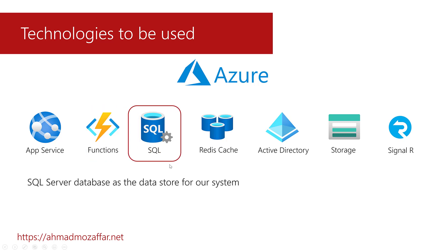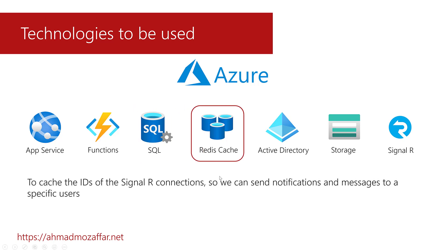The data store is going to be SQL. We will use Azure SQL databases to store the data. We will also use the Azure Redis Cache to cache some data — specifically the IDs of the SignalR connections, so we can send notifications and messages from the server to the front-end for specific users or groups of users.